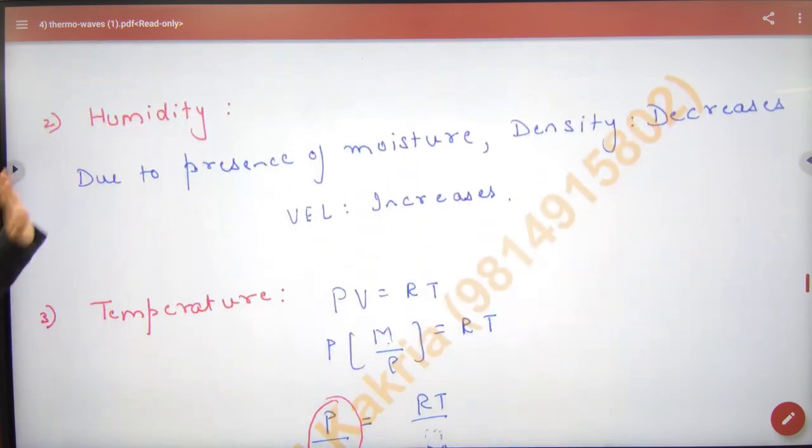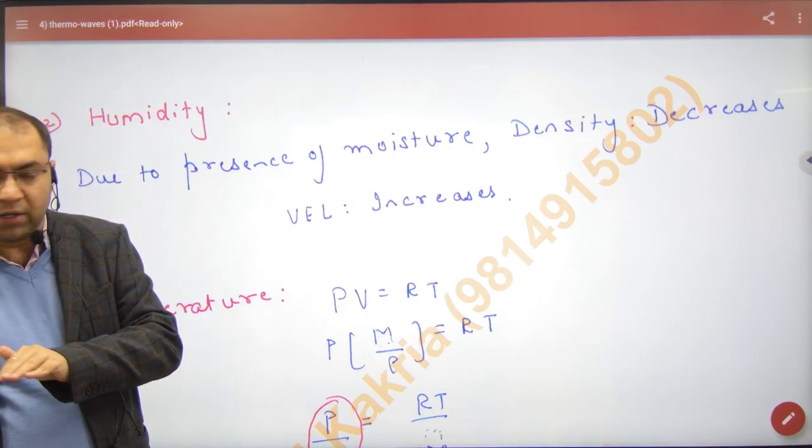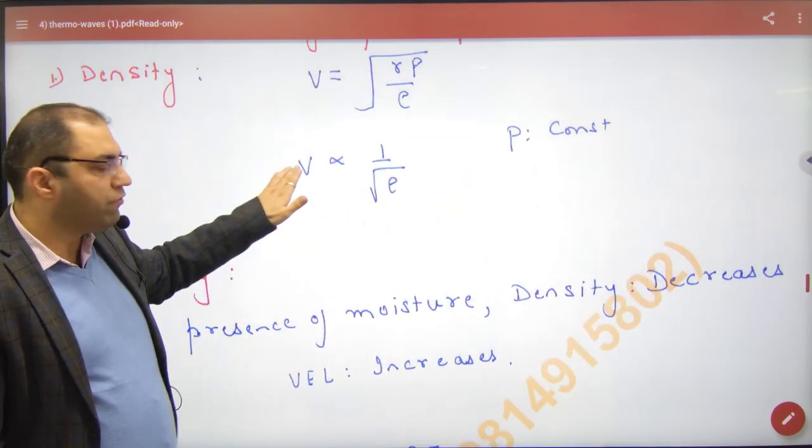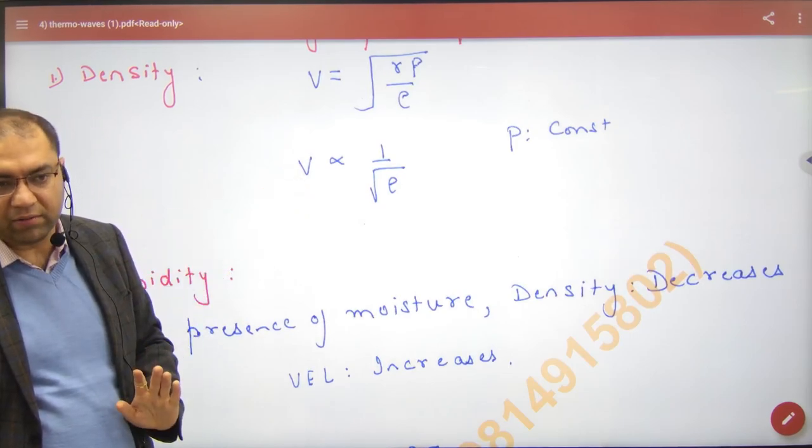The second result is humidity. Humidity moisture has density less than air, so velocity is less than air. Moisture, however, the velocity is more than air.